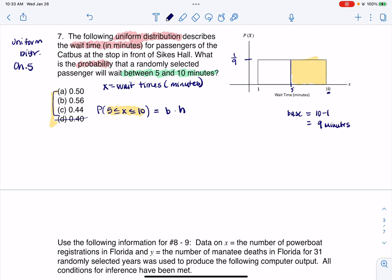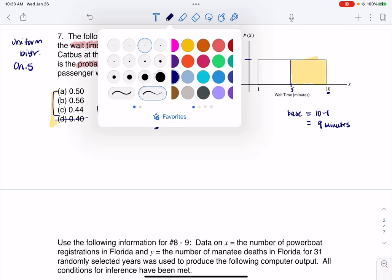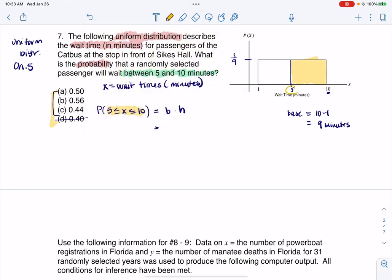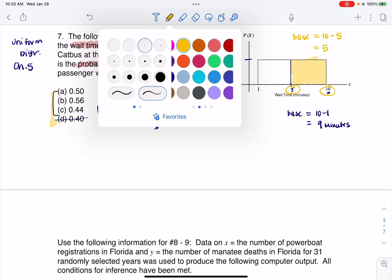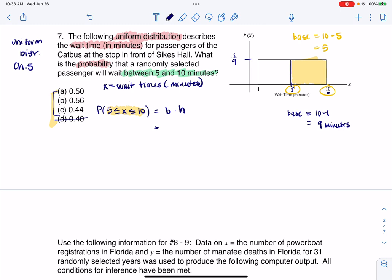So the base of that yellow rectangle, and let me change my pen color here. My base here is between five and ten. So the base of my yellow rectangle, I'm going to go ten minus five. That's going to be five. Let me switch back to purple. So this is going to be five. My uniform height is one ninth. So this is five ninths, which as a decimal is about 56%.